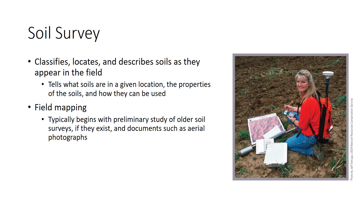Mapping a soil typically begins with a preliminary study of older soil surveys, if they exist, and documents such as aerial photographs. The survey then moves out into the field. This soil scientist, conducting a soil survey in Virginia, observed surface features, probes the soil, and records field observations on a small handheld computer for geographic processing.